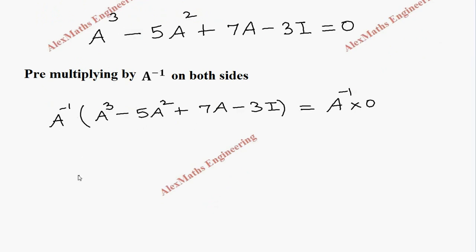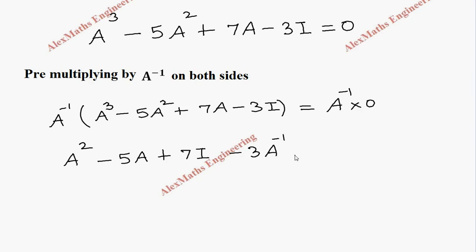When we multiply by A inverse: A inverse into A cubed gives A squared. A inverse into A squared gives A. That is, A cubed into A inverse is A squared. Then A squared into A inverse is A. Then 7 into A inverse into A is identity. Then minus 3 A inverse — and no need to write I again — which equals 0.